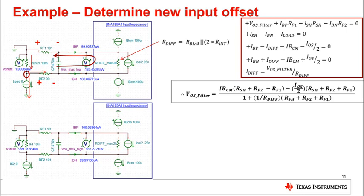From this equation, we can reason that the largest positive offset will occur when RF1 is less than RF2 and input offset current is negative. Or the largest negative offset will occur when RF1 is greater than RF2 and input offset current is positive. R_diff and offset are positively correlated, so the max R_diff will generate worst case offset. The max R_diff assumes positive 20% tolerance for R_bias and Rint. Thus, R_diff max is 3 kΩ in parallel with 2 times 3 kΩ, yielding a 2 kΩ effective input resistance. Plugging these values into the offset equation, we calculate approximately positive 187 microvolts and negative 185 microvolts.